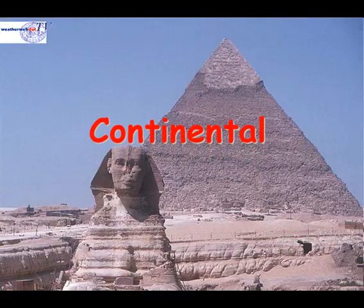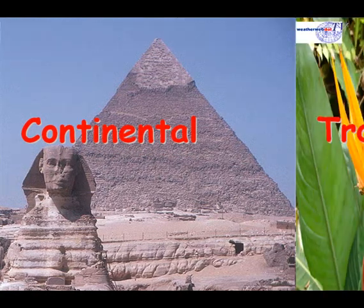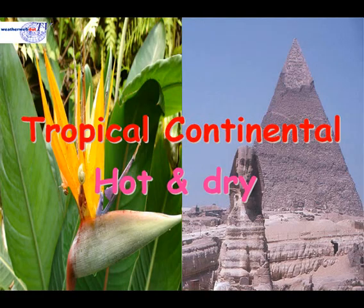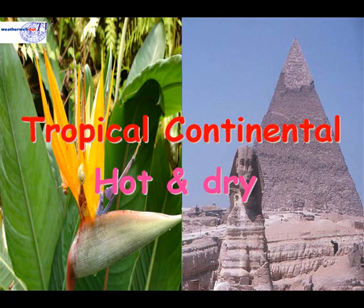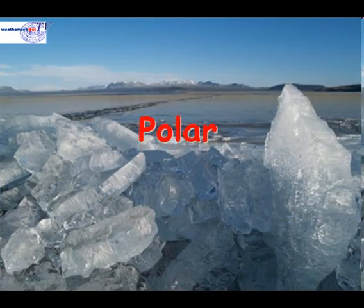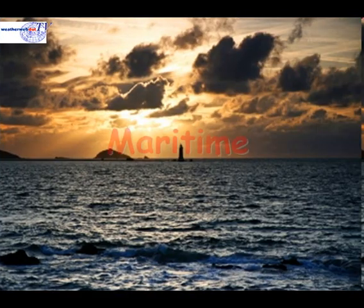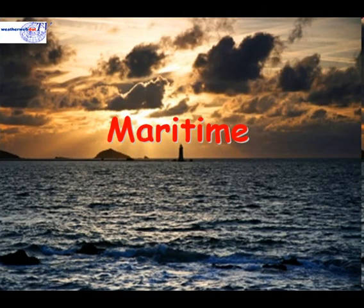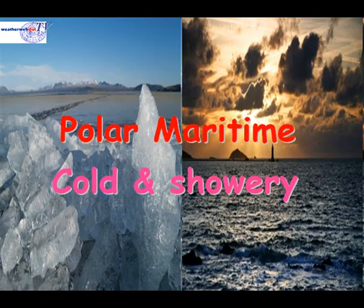Tropical air can also be combined with continental air. In the case of the British Isles, this air has originated over the tropics, moved eastwards across the Atlantic, across Portugal, Spain and France, and is then hot and dry by the time it reaches the British Isles. Polar air can be combined with maritime air, giving us the polar maritime air mass. This is generally unstable air — cold and showery — giving us sunshine and showers conditions, with deep blue skies in between some pretty hefty showers.